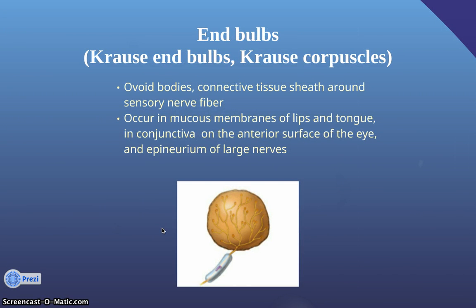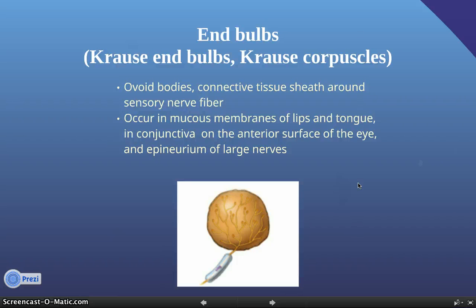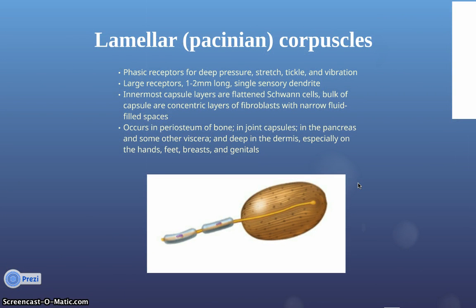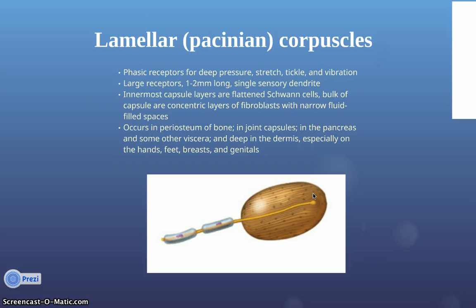The end bulbs are ovoid bodies with a connective tissue sheath around a sensory nerve fiber. They occur in the mucous membranes of the lips, tongue, the conjunctiva on the anterior surface of the eye, and the epineurium of large nerves. The lamellar corpuscles are phasic receptors for deep pressure, stretch, tickle, and vibration. They are relatively large — one to two millimeters long — with a single accessory dendrite. The innermost capsule layers are flattened Schwann cells, and the bulk of the capsule consists of concentric layers of fibroblasts with narrow, fluid-filled spaces. They occur in the periosteum of bone, joint capsules, the pancreas and some other viscera, and deep in the dermis, especially on the hands, feet, breasts, and genitalia.